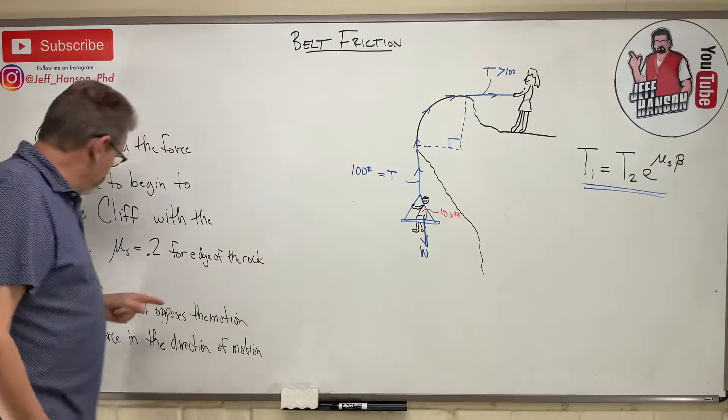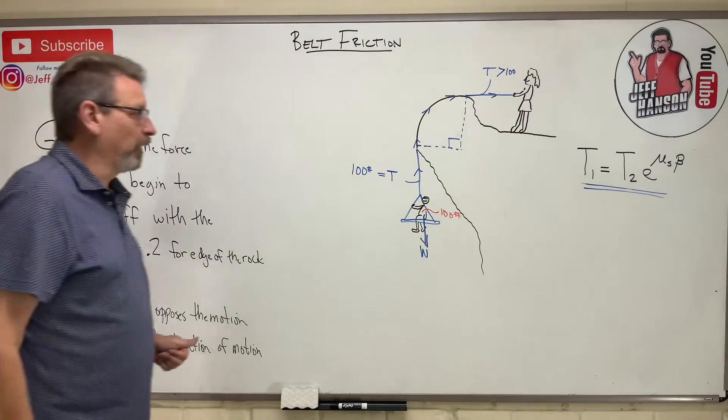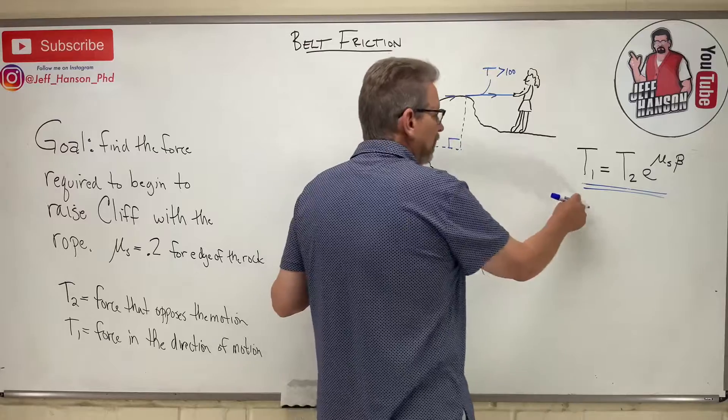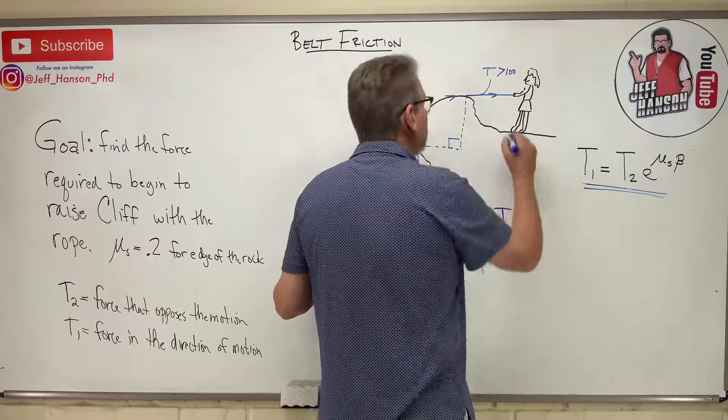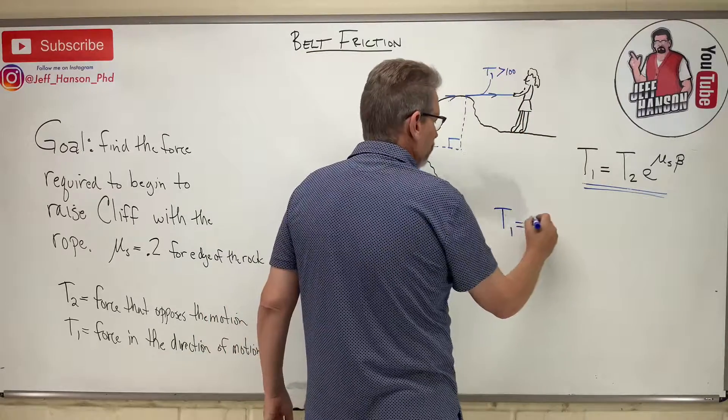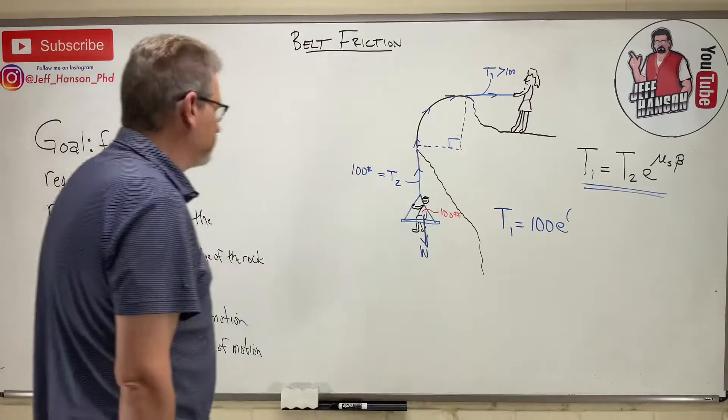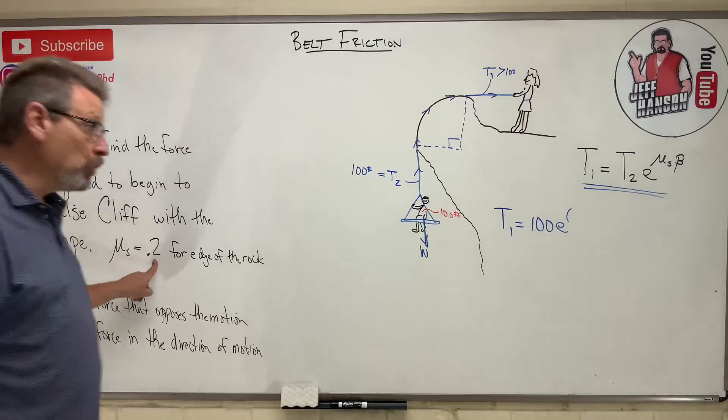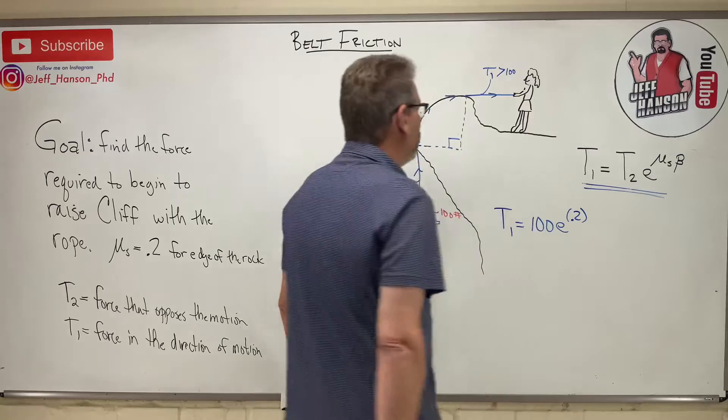Cliff is opposing the motion so he is T2. The 100 is going to be the T2. The T1 is going to be up there at the top, that's what Esmeralda is going to have to be pulling. Let's see if we can solve this by plugging those numbers into our equation. So T1 is up here, this is T1, this is T2. T1 is what we're looking for is equal to 100 times e to the coefficient of static friction 0.2 for the edge of the rock there, so 0.2, and then times beta.